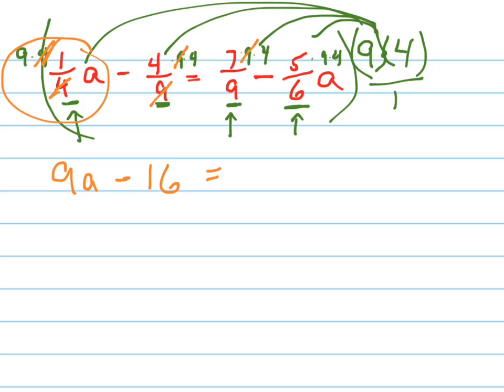Equals. These 9's cancel out. So 7 times 4. And that's just 7 times 4, which is 28.